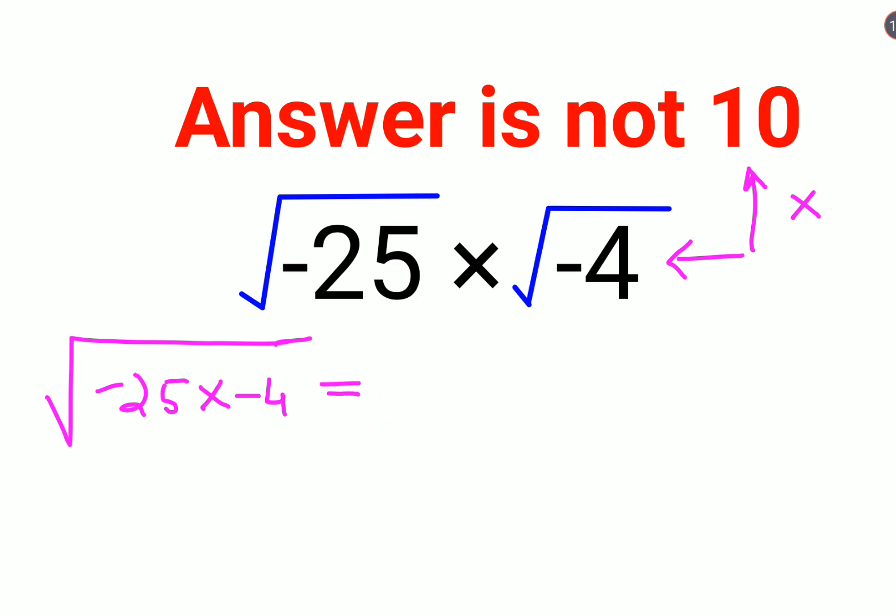And according to our understanding, minus into minus gets you plus, and 25 into 4 gets you 100. So it will be positive 100 and root of a positive number is always positive. So here a lot of people make the mistake and think that the answer is 10.